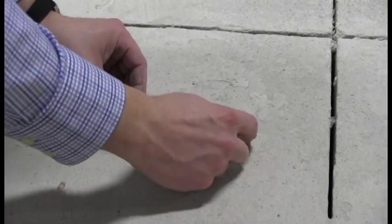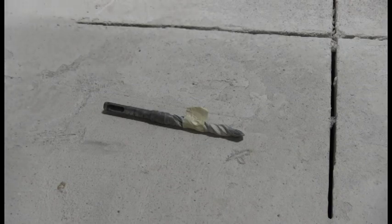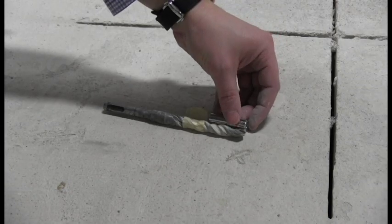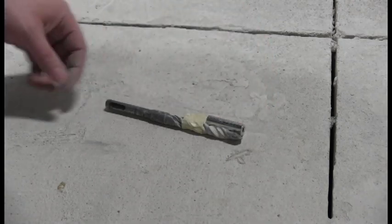Select the appropriate size drill bit. In this case, we are using a half-inch drill bit for a three-eighths inch drop-in anchor. Mark the drill bit to the length of the drop-in anchor.